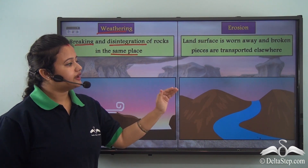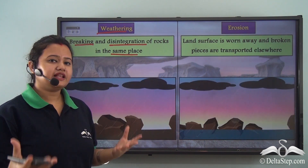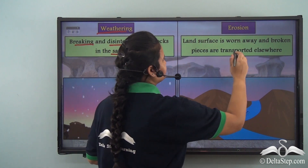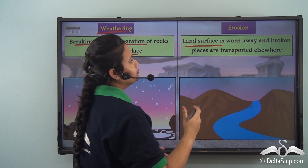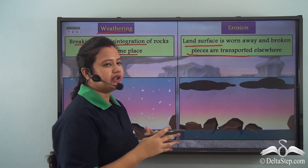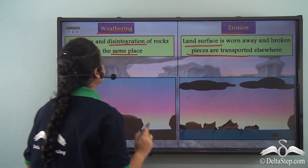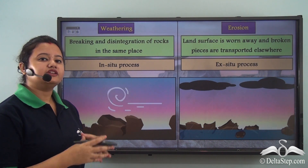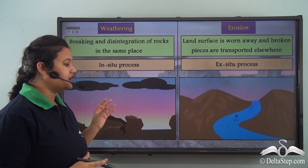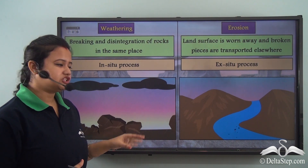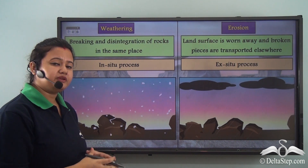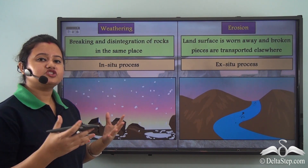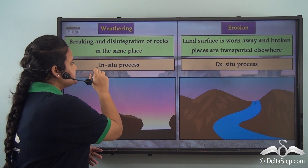We also saw another process where the broken pieces were carried elsewhere by the action of running water. This process, wherein the land surface is worn away and the broken pieces are transported elsewhere by natural agents, is known as erosion. In the case of weathering, the broken pieces of rocks do not change their position — they remain static at their original location. So weathering is known as an in-situ process.